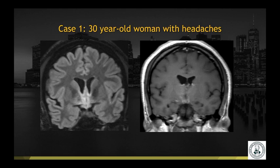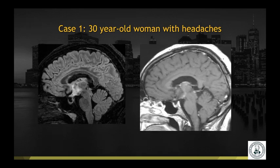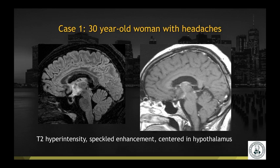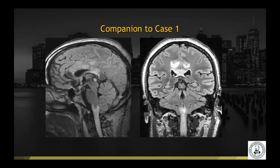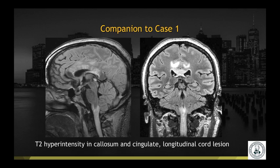Case number one: a 30-year-old woman with headaches. We have a coronal T2 FLAIR as well as coronal T1 post-gadolinium images. This is the same patient with sagittal images shown. Findings include T2 hyperintensity and speckled enhancement centered in the hypothalamus. A companion case in a different patient shows T2 hyperintensity in the corpus callosum and the cingulate gyri bilaterally, as well as a longitudinal cord lesion in the visualized cervical cord.